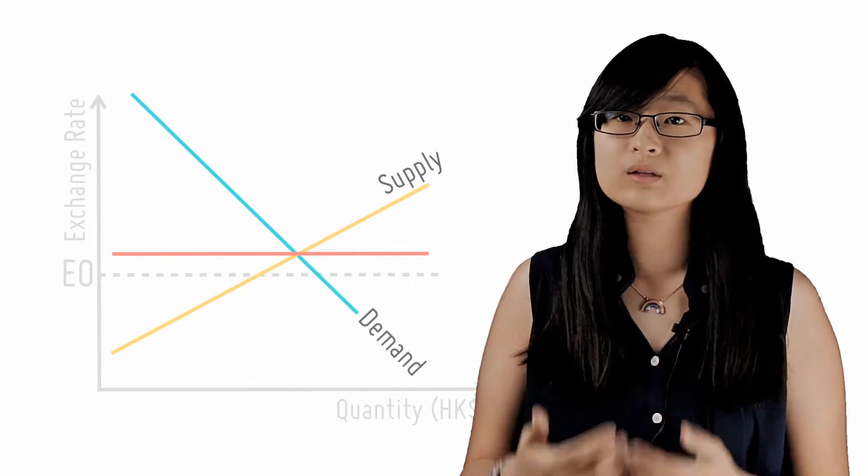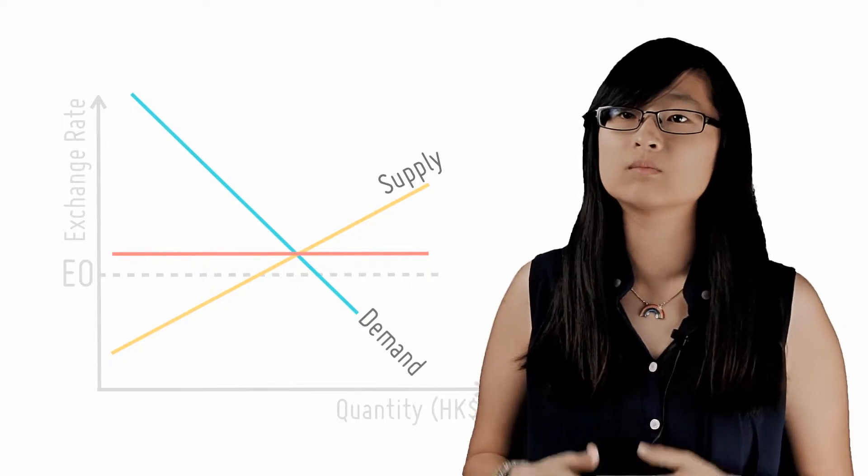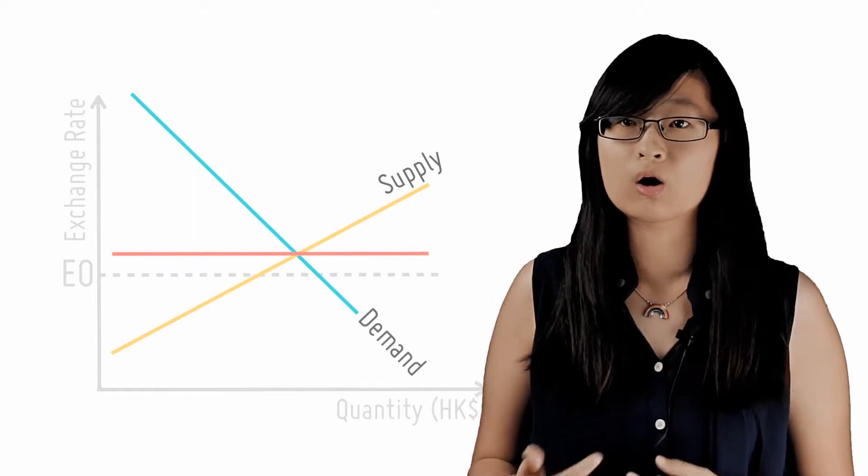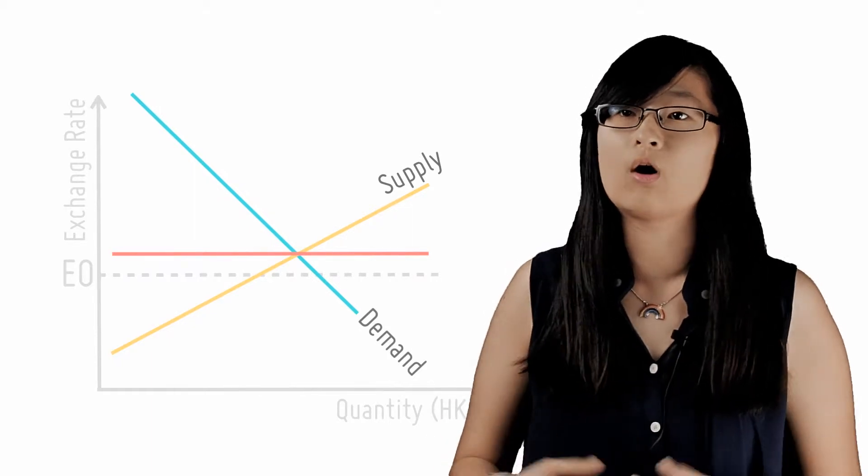To counteract this increase, the government releases more Hong Kong dollars in the forex market by buying foreign currency to which the Hong Kong dollar is pegged in exchange for Hong Kong dollars.